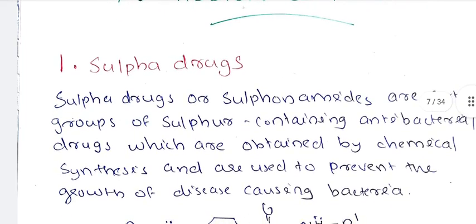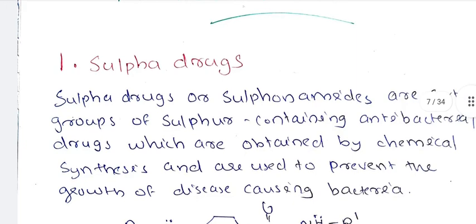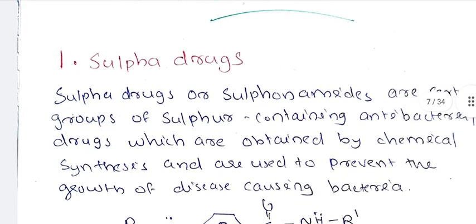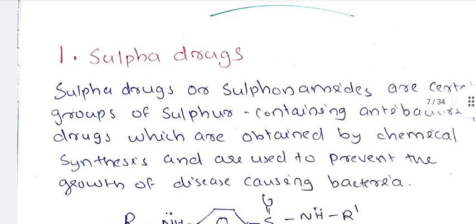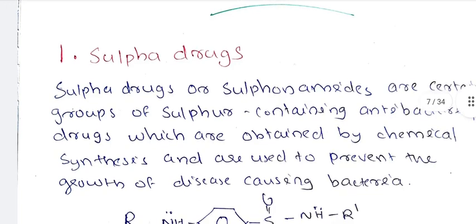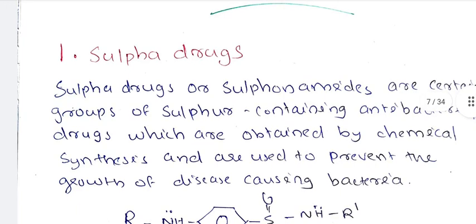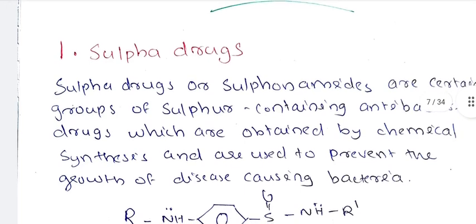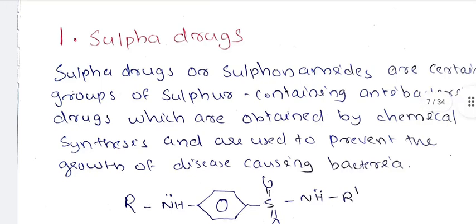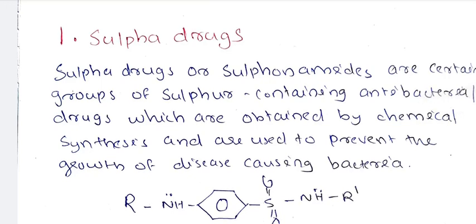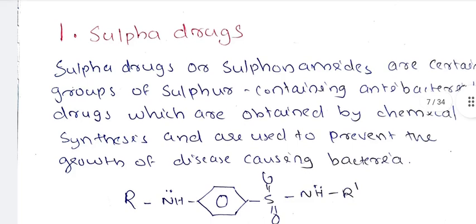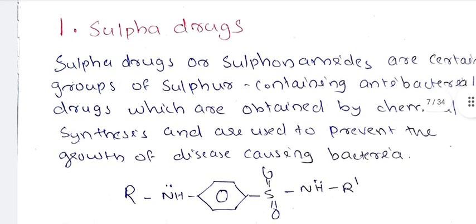Preparation recap: Starting with aniline, which is treated with acetic anhydride to form N-H-CO-CH3. Then chlorosulfonic acid treatment gives SO2Cl intermediate. Then treatment with primary amine (NH2) introduces the amino group. The last step is hydrolysis to give the final sulfonamide product.